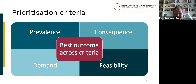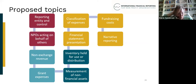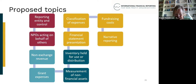We prioritised those issues that rate most highly across all of the criteria. As part of the consultation paper, we're asking whether this is the right approach and whether we're asking the right questions to help us focus on the right issues for MPOs. The topics we've determined to have the highest priority are shown in this slide in front of you now.